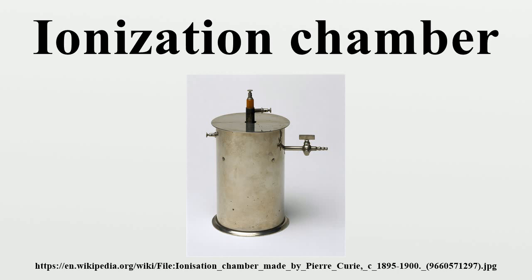This generates an ionization current which is measured by an electrometer circuit. The electrometer must be capable of measuring the very small output current, which is in the region of femtoamperes to picoamperes. Depending on the chamber design, radiation dose, and applied voltage, each ion pair created deposits or removes a small electric charge to or from an electrode, such that the accumulated charge is proportional to the number of ion pairs created, and hence the radiation dose.